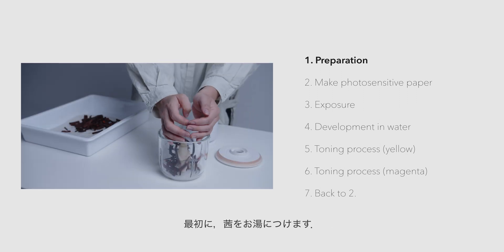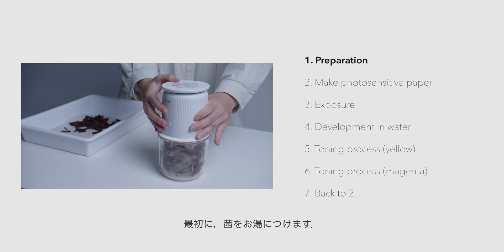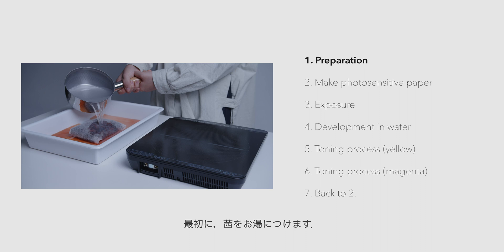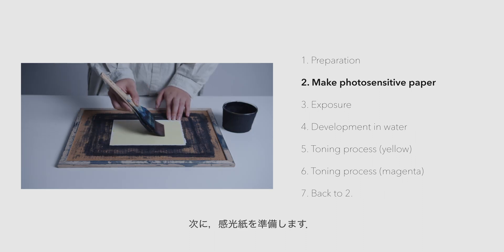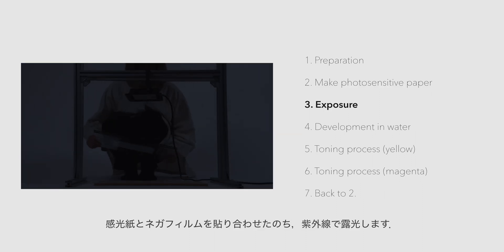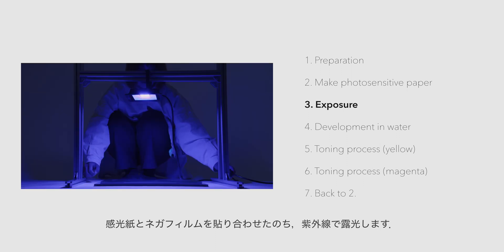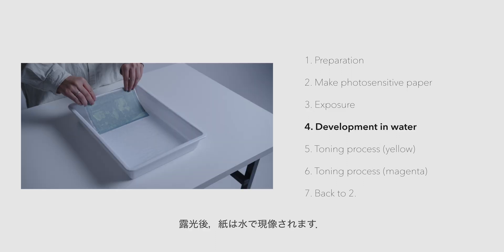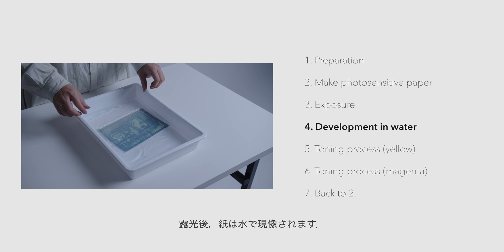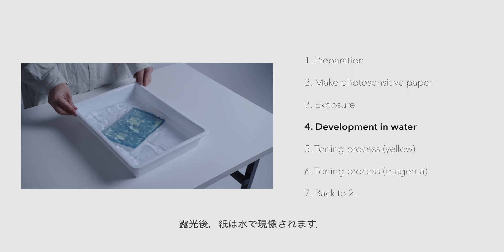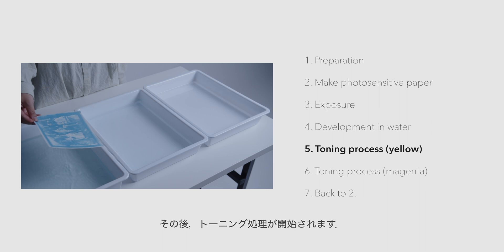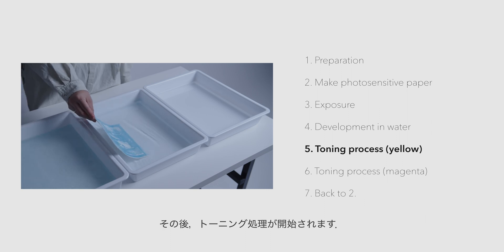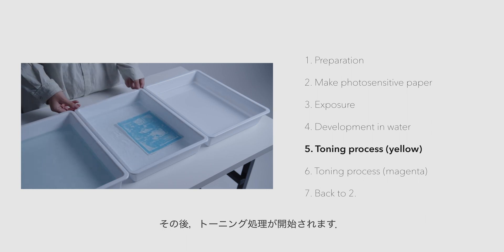First, preparations such as boiling the matter in hot water are carried out. Next, a photosensitive paper is created. Then, after laminating the prepared negative film and photosensitive paper, it is exposed to ultraviolet light.